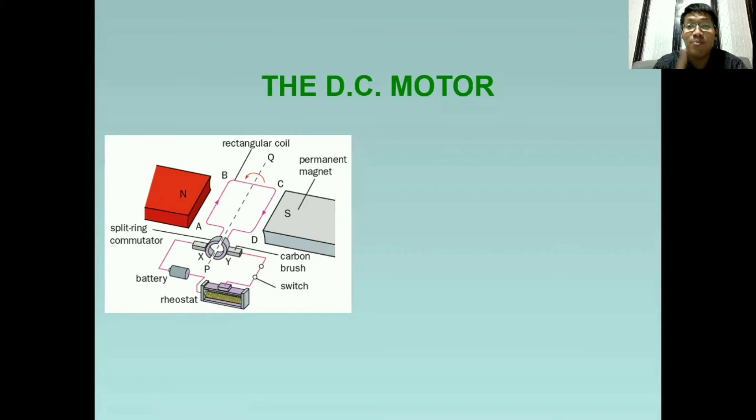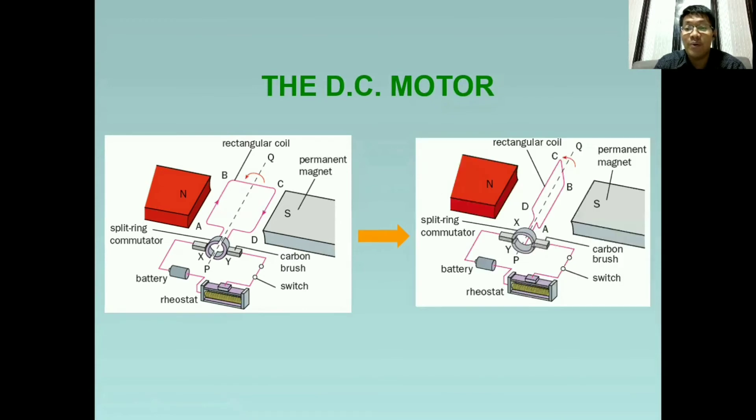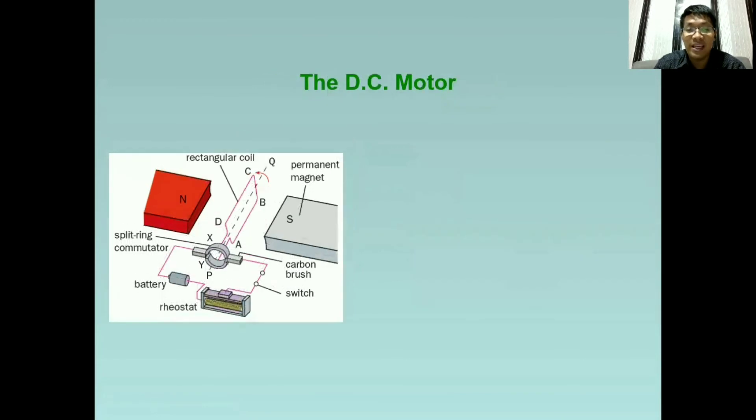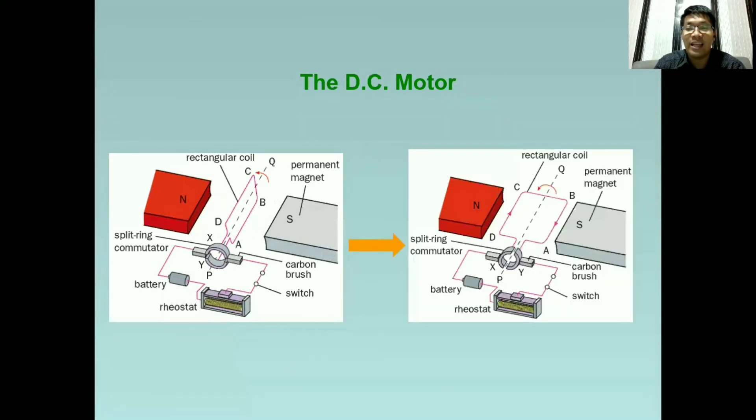Tatandaan natin na ang movement na ito ng rectangular coil ay tinatawag nating turning effect, which is caused by the interaction of the magnetic field of our strong magnet and also the magnetic field produced in the current carrying coil. So as it turns, we will have this position. So there will be switching. And later on, it will look like this.